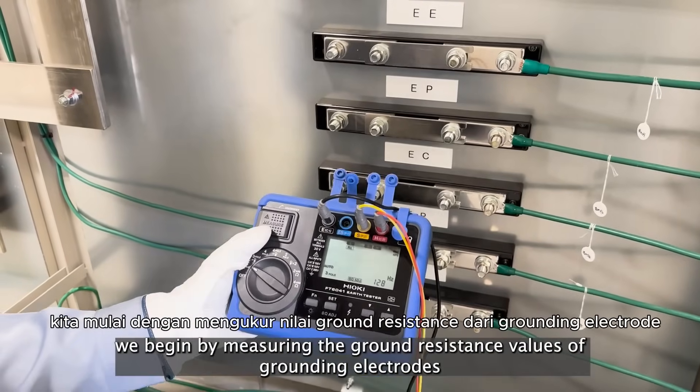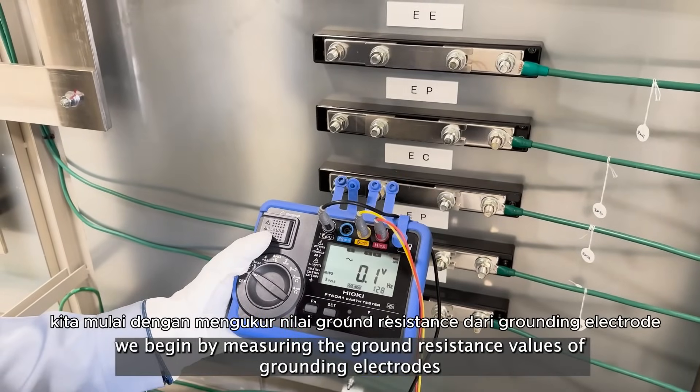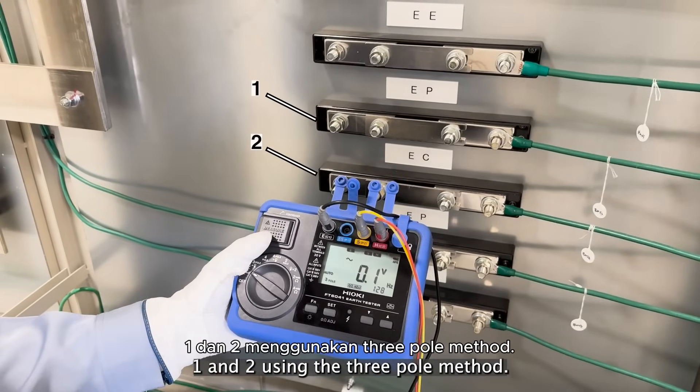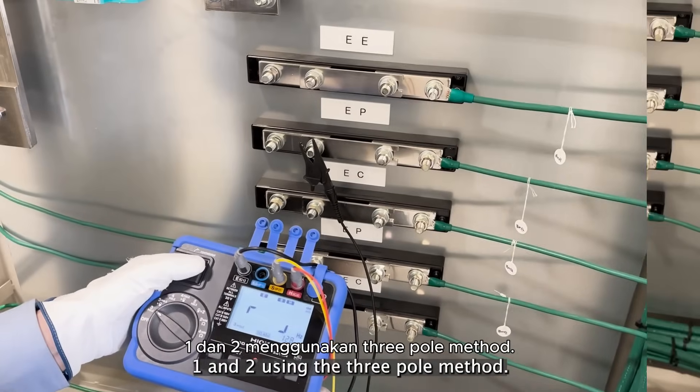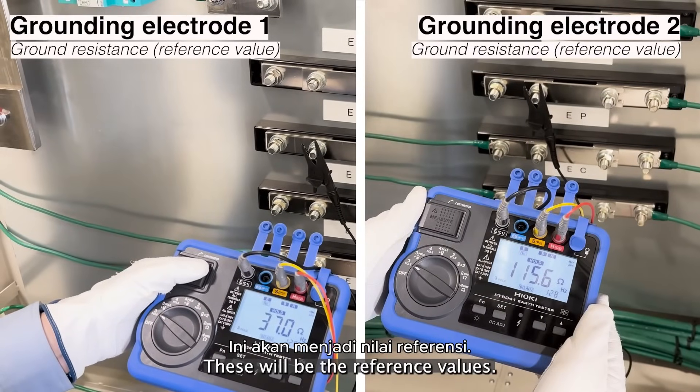First, we begin by measuring the ground resistance values of grounding electrodes 1 and 2 using the 3-pole method. These will be the reference values.